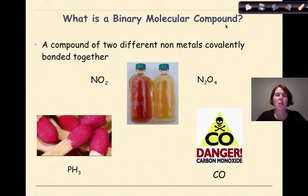What is a binary molecular compound? So remember bi means two, molecular means molecule and molecule means nonmetal and nonmetal means covalently bonded. So it's two nonmetal elements coming together to form a compound. If we look at our definition here, a compound of two different nonmetals covalently bonded together.